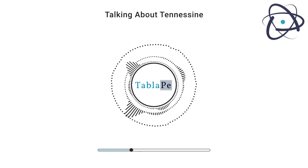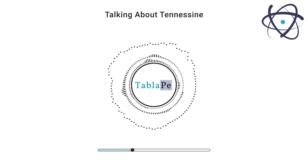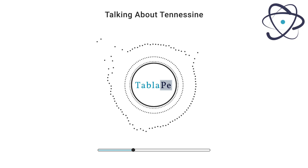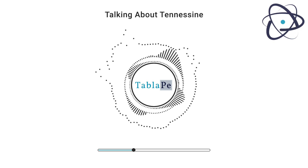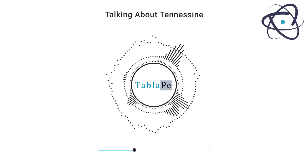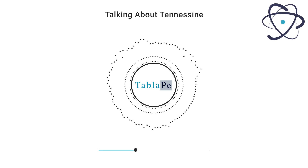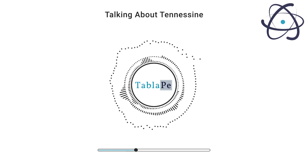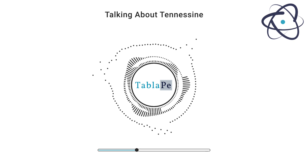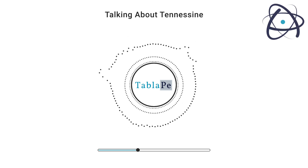Its properties may resemble those of other halogens, albeit briefly, before it undergoes radioactive decay. Tennessine is not found in nature and must be produced artificially in a laboratory. The production process involves a highly sophisticated technique known as nuclear fusion.